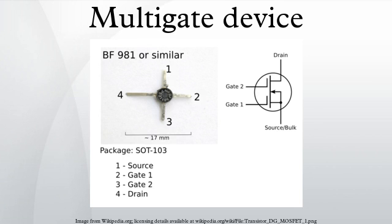A multi-gate device, or multiple gate field effect transistor, refers to a MOSFET which incorporates more than one gate into a single device. The multiple gates may be controlled by a single gate electrode, wherein the multiple gate surfaces act electrically as a single gate, or by independent gate electrodes.